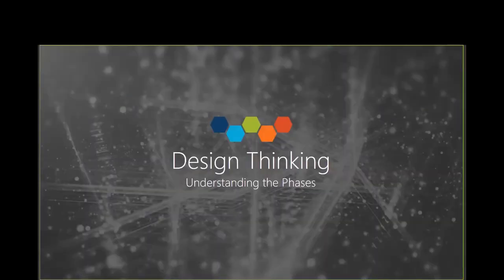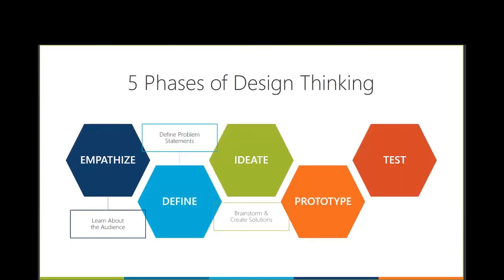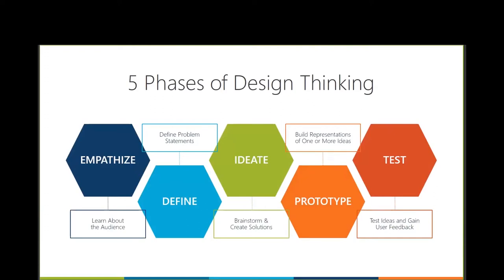But before we start with Prototype, as a quick reminder, there are five phases in design thinking: Empathy, Define, Ideate, Prototype, and Test. Empathy is where we learn about the audience, gather all the information about them, and understand them. We synthesize that information down, define problem statements, and evolve those into how might we questions. We then take those how might we questions, brainstorm on them, ideate, and come up with as many ideas as possible to solve for those questions. Then we narrow that scope, prototype, build quick representations of ideas, and test those ideas to gain user feedback into solving their problems.